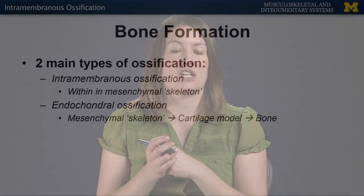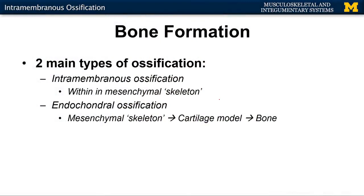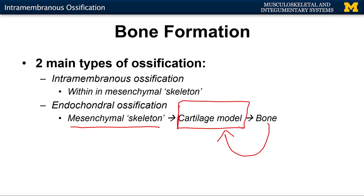Then it'll kind of break up into two main types of ossification: intramembranous ossification and endochondral ossification. Intramembranous is going to have the complete replacement of that mesenchymal skeleton with bone — fairly straightforward. With endochondral, you'll have an additional step: you start with the mesenchymal skeleton, then you have the development and growth of a cartilage model, and then bone will replace that cartilage model. You can see the root 'chondre,' which indicates cartilage.